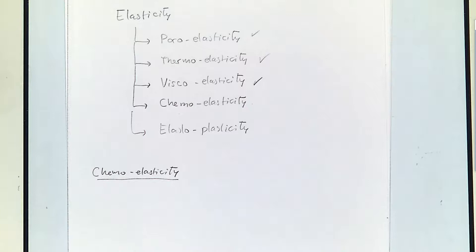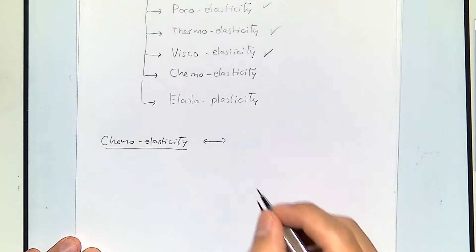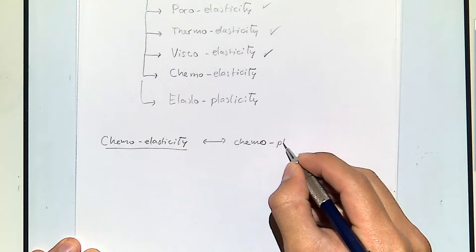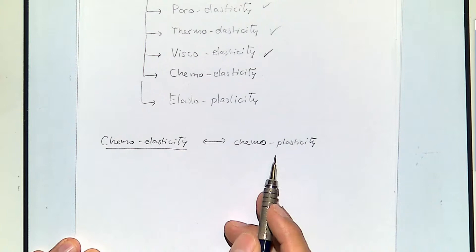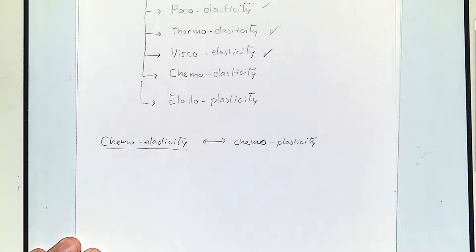We'll just talk about chemoelasticity for now. This will be a simpler version of something that we're going to link with it later on. In many cases, the part of chemoelasticity or permanent deformations related to changes of chemistry will be more important than elastic deformations, but for now let's just limit it to elastic deformations.